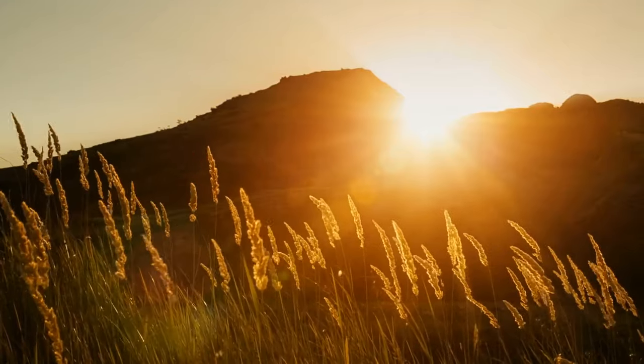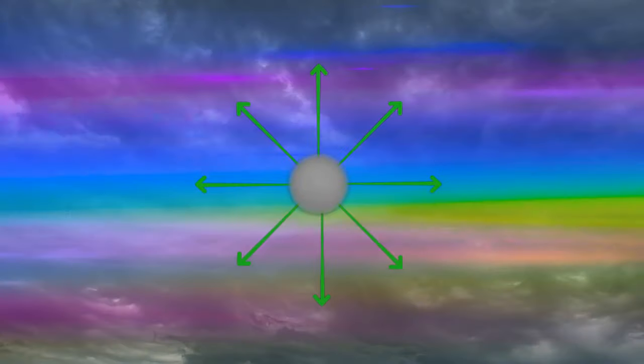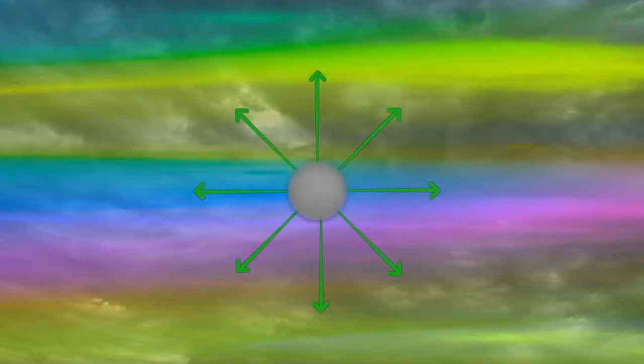It all means that even if the sunrises and sunsets seem red and orange to us, in fact, there are still blue and green waves among them. But they have to bounce off something to reach us faster and become stronger than the red rays.